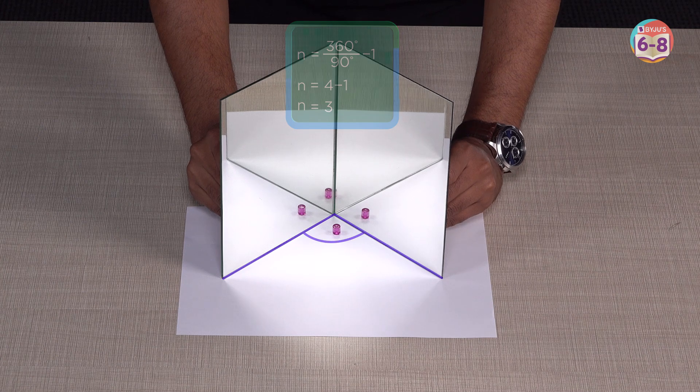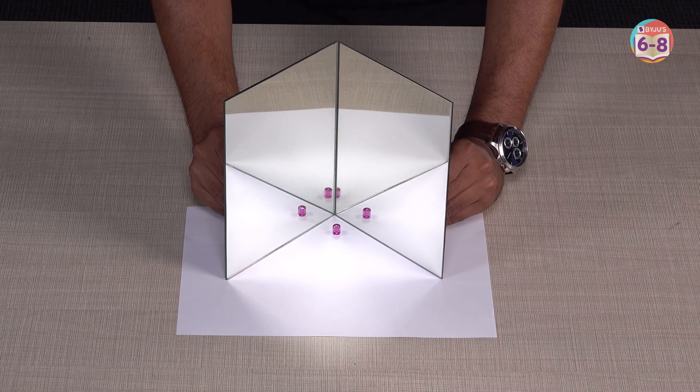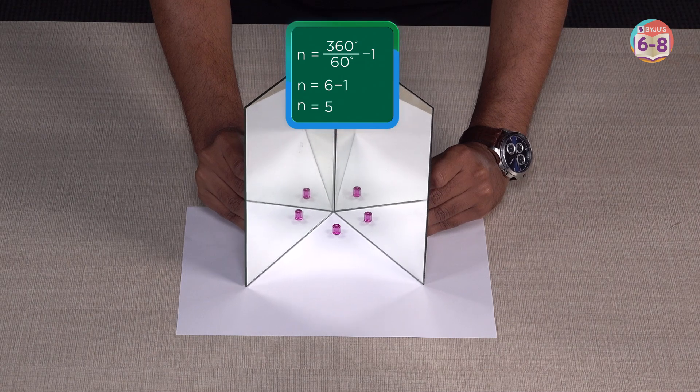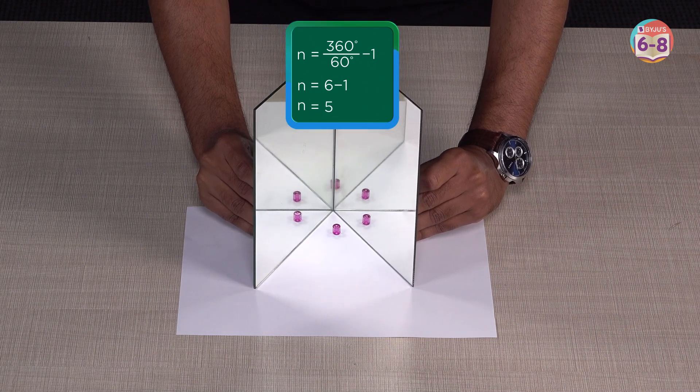If I reduce the angle even further and let's say, I take it to 60 degrees, you see 5 images.